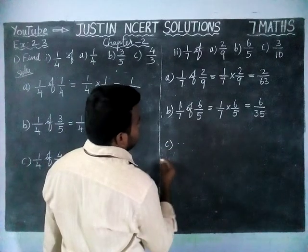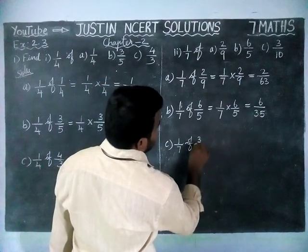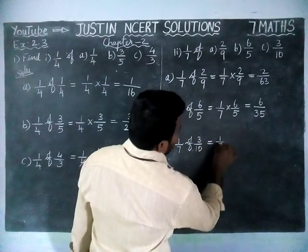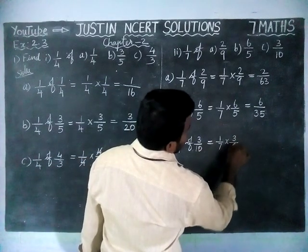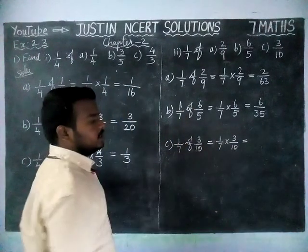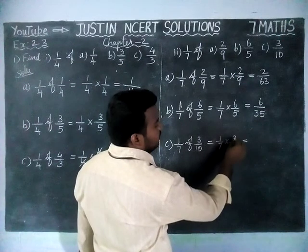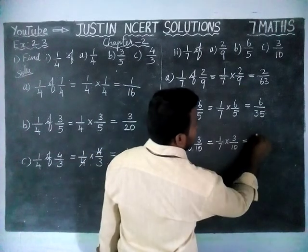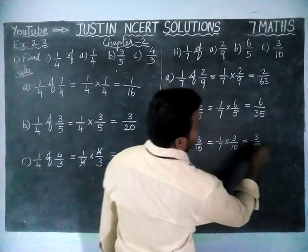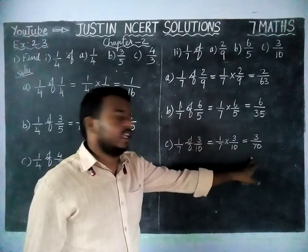Next, option C: 1/7 of 3/10 is equal to 1/7 into 3/10. Here also we cannot simplify by any common divisor. So we multiply numerator into numerator: 1 into 3 is equal to 3, and 7 into 10 is equal to 70. This is also a proper fraction, so we cannot divide hereafter.